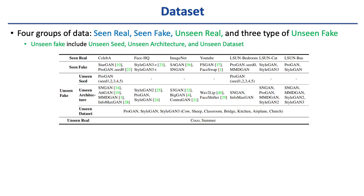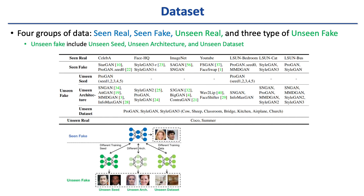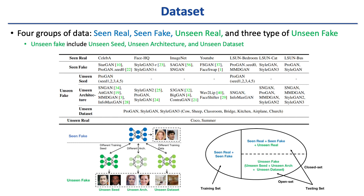We construct a dataset for evaluation with four groups of data: seen-real, seen-fake, unseen-real, and unseen-fake. Seen and unseen indicate whether images in this group are used for training. The unseen-fake group includes unseen models trained with partly the same settings as seen-fake ones, but with different seeds, architecture, or training datasets. The training set contains seen-real and seen-fake. In the testing set, the closed set contains seen-real, seen-fake, and unseen-real, while unseen-fake are all taken as open set classes.